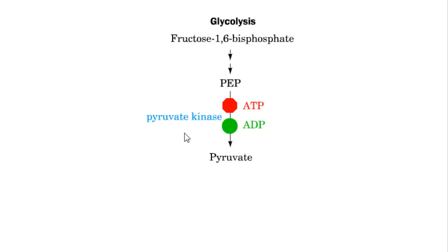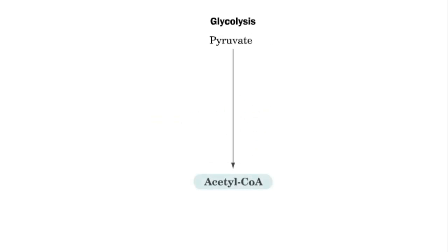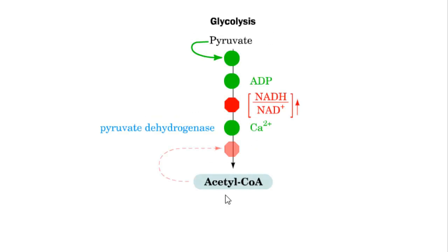Going backwards from pyruvate to phosphoenol pyruvate requires much more energy and completely different bypass pathways, as used in gluconeogenesis. The conversion of phosphoenol pyruvate to pyruvate by pyruvate kinase is inhibited by the product ATP and activated by the substrate ADP.